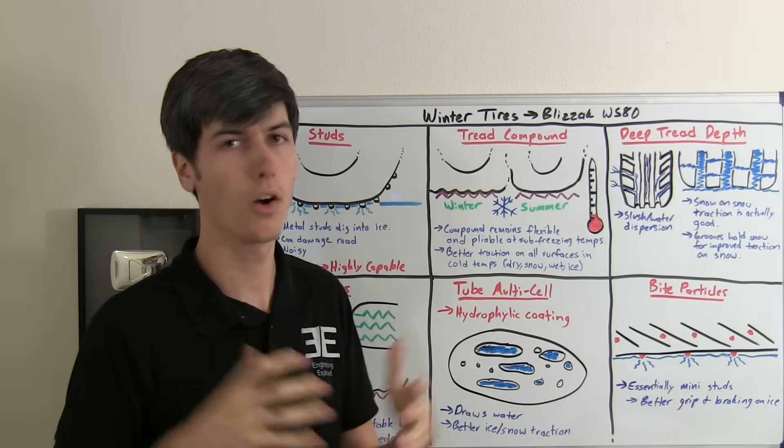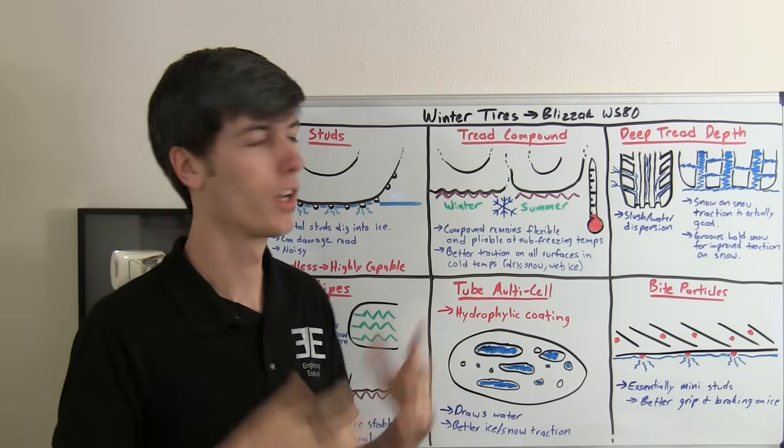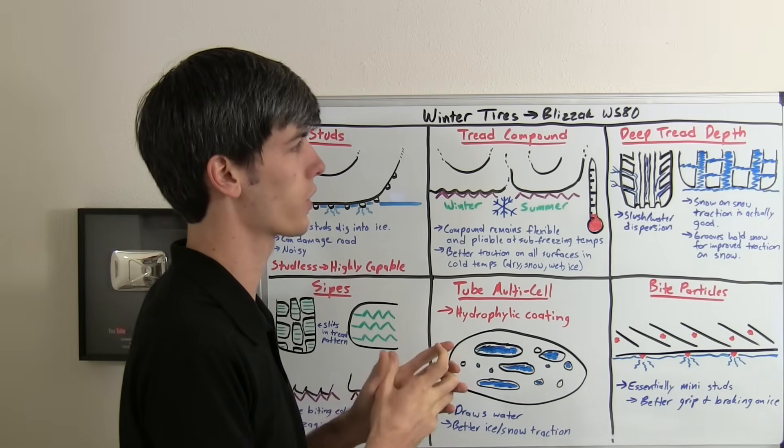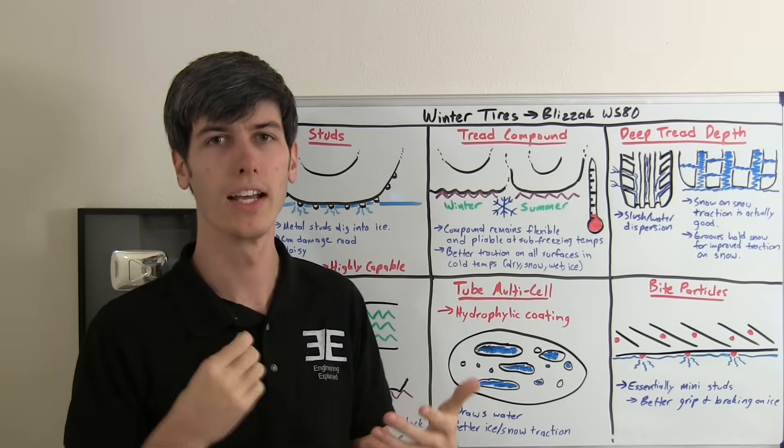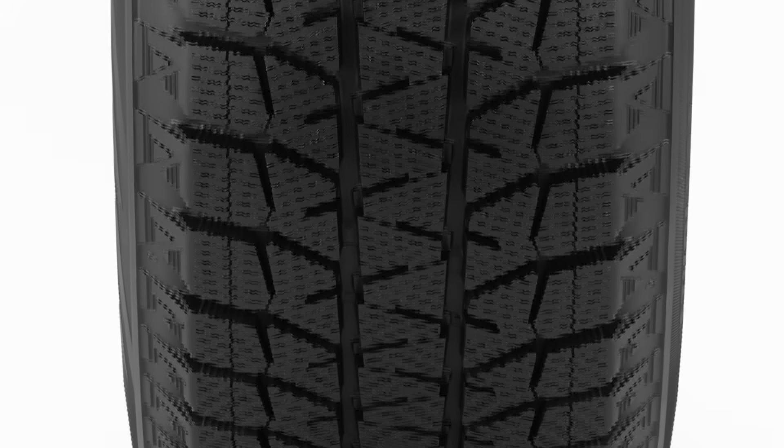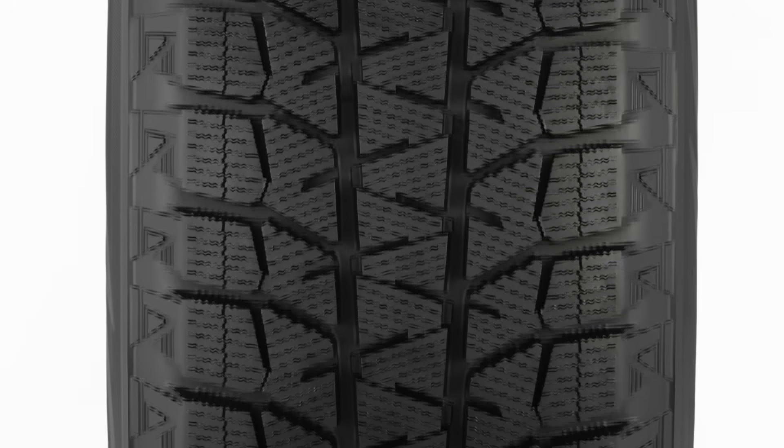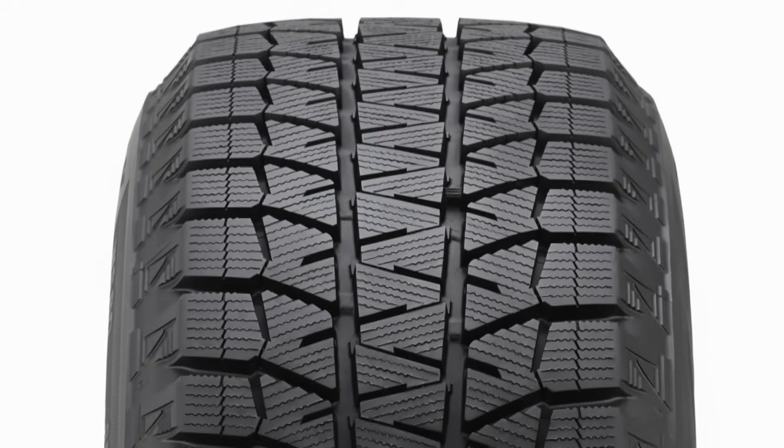The other thing is on snow, when you're actually driving these tires on snow, when you get packed snow up in the tire, a lot of people think that's actually going to make the traction worse, but in fact it does the opposite. Snow on snow traction is actually really good. So when these deep grooves hold in snow and pack it in there, when you're driving on top of snow, that snow on snow friction is actually pretty high, so it helps improve traction on top of snow.